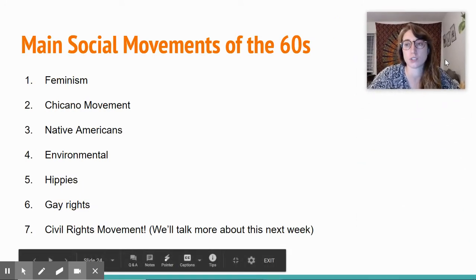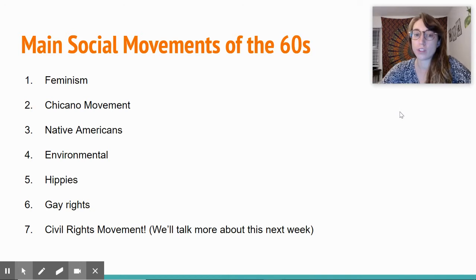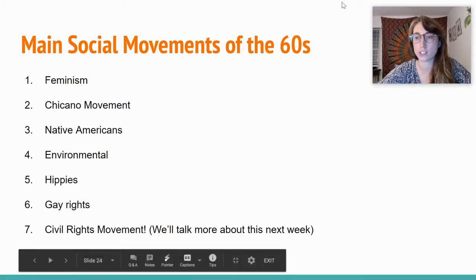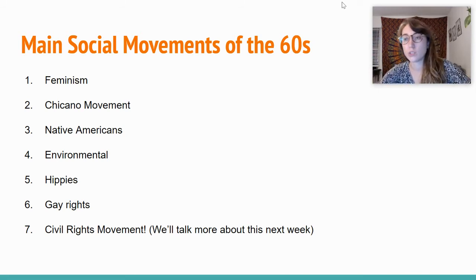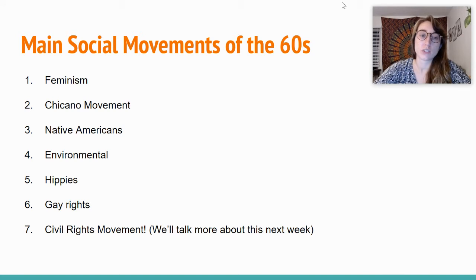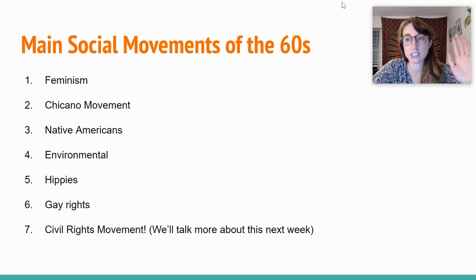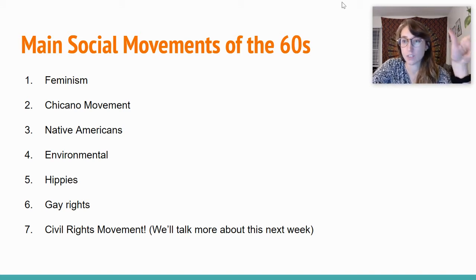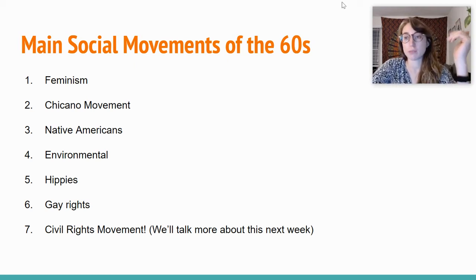These are some of the main social movements of the 60s. If you choose to do this assignment for your unit four assignment, you will have to choose two of these to research more in depth. We have feminism as a movement, which still exists today in many different forms — basically just the equalizing of women. Then we have the Chicano movement, Native Americans, the environmental movement starting in the 1960s which we are still concerned with today, hippies evolving out of the beatniks of the 50s, the gay rights movement really taking off in the 60s, and the civil rights movement, which we will talk a lot about next week.